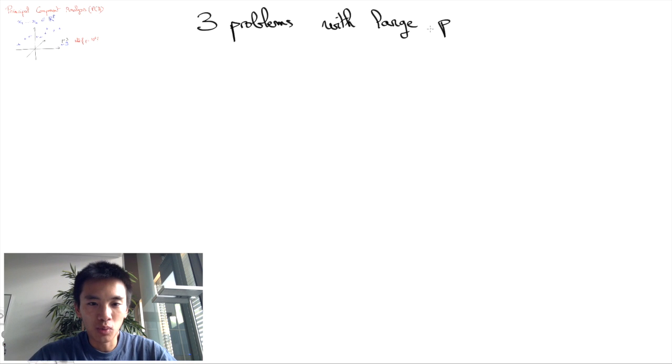Now there are three major troubles with large values of p. First, high dimensional vectors are hard to visualize.